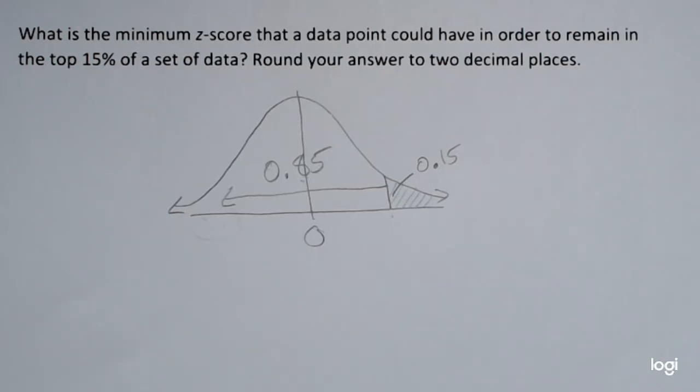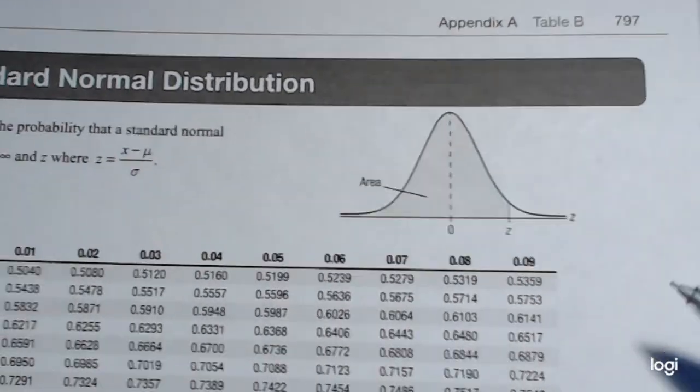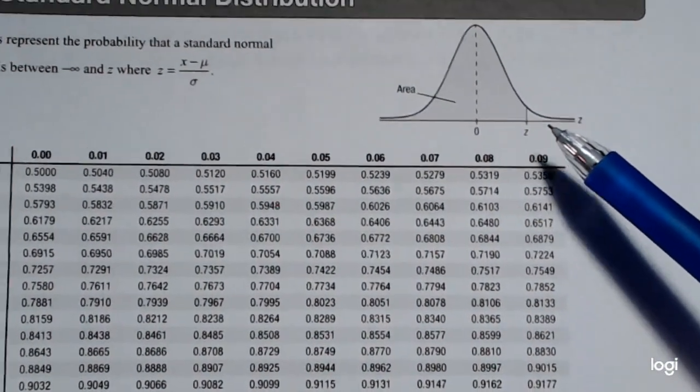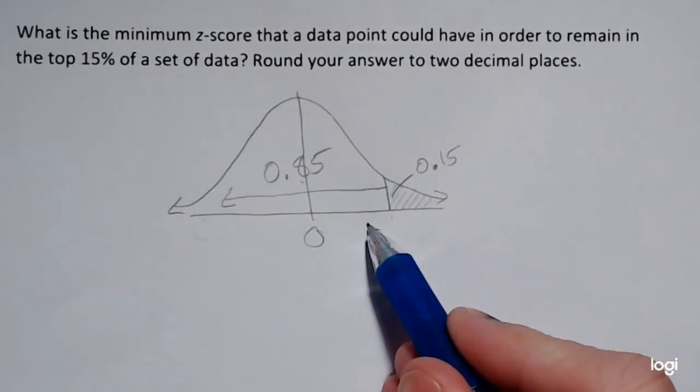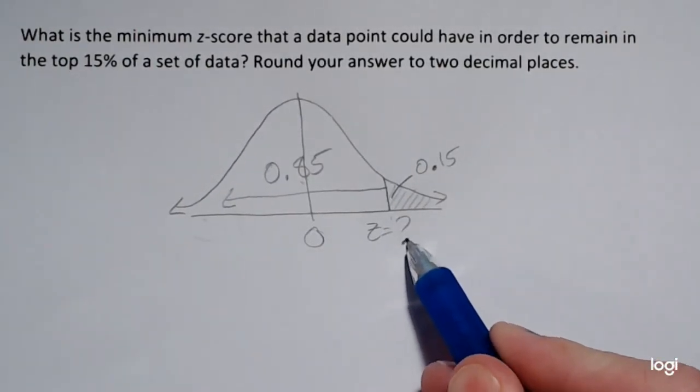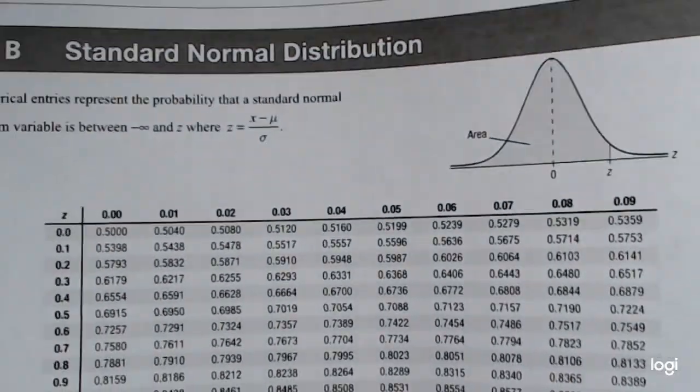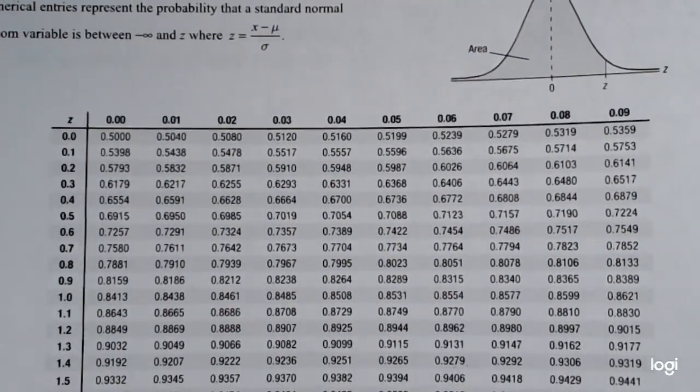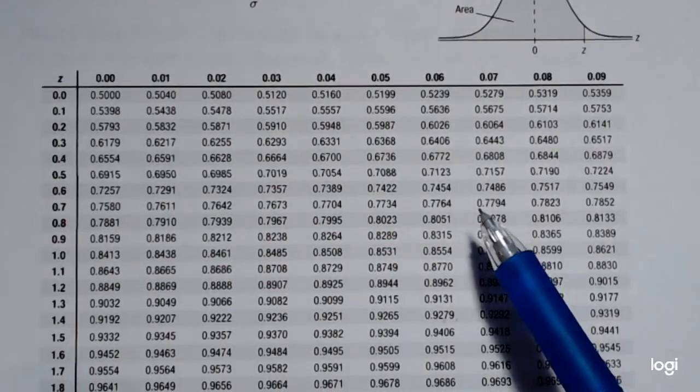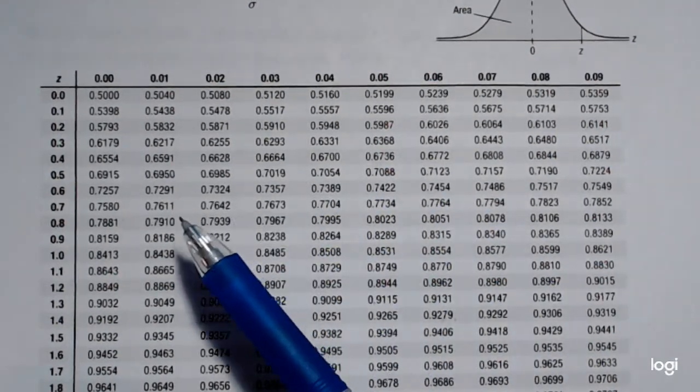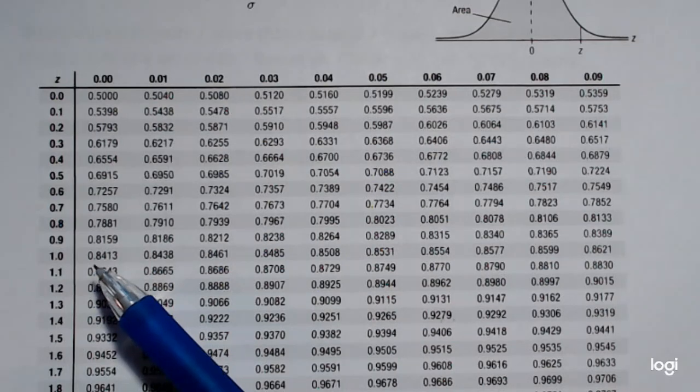Since I know that z is positive, I want to go to my page that corresponds to positive z-scores. Now I'm looking for the z-score. The z-score is the mystery value. And I'm given the area first. I'm given a cumulative area of 0.85. So I need to look in the body of the table as close as I can get to 0.85.